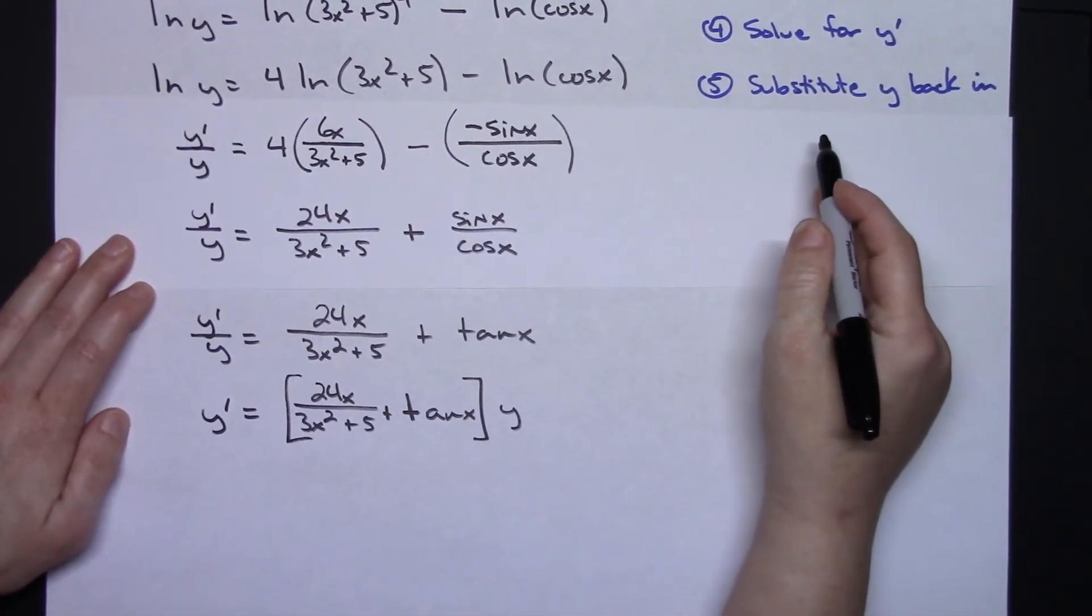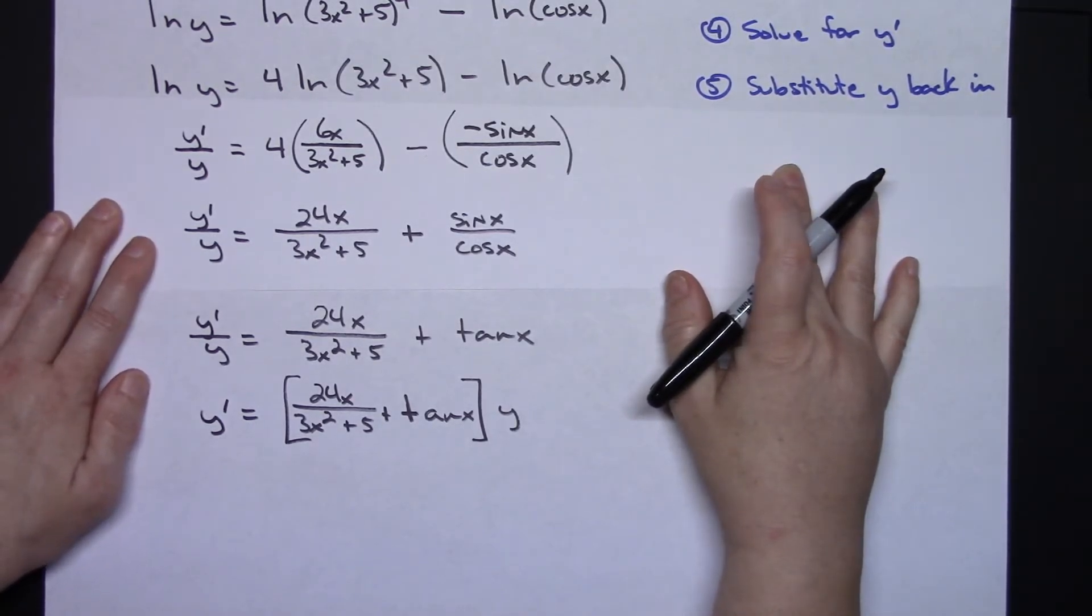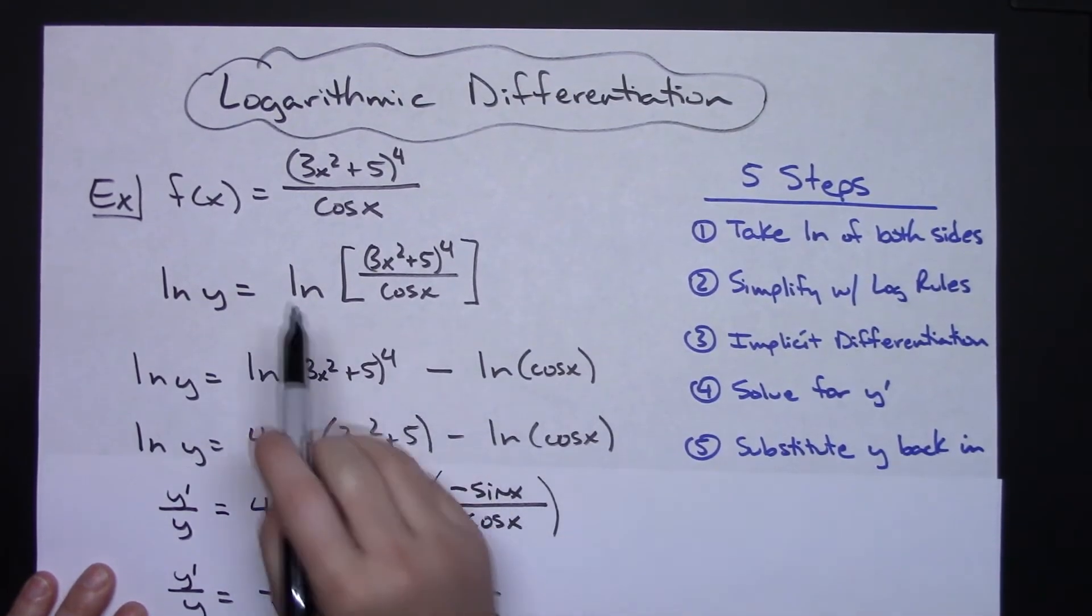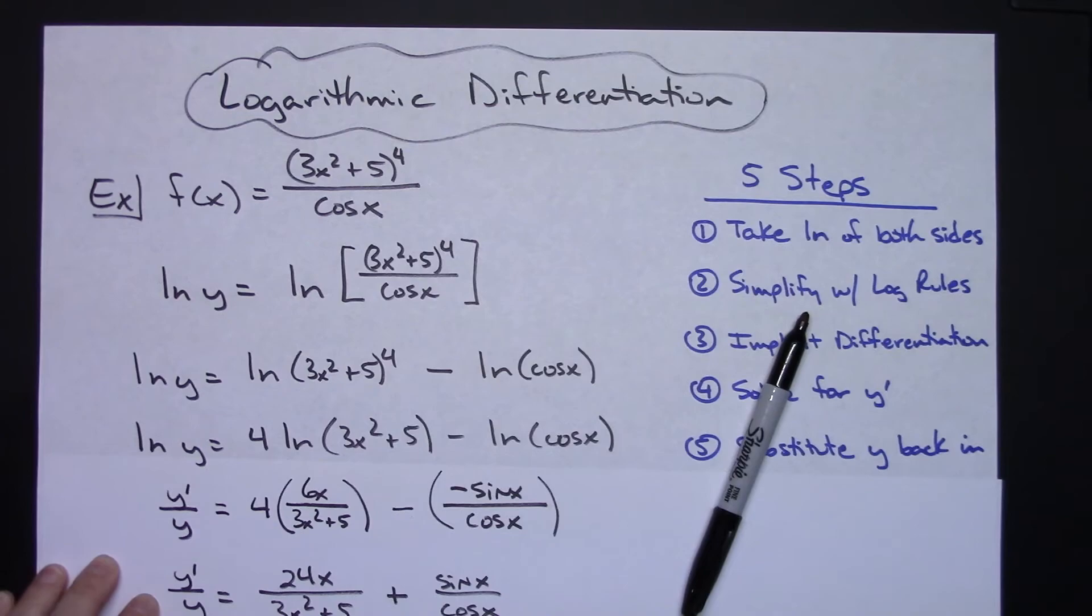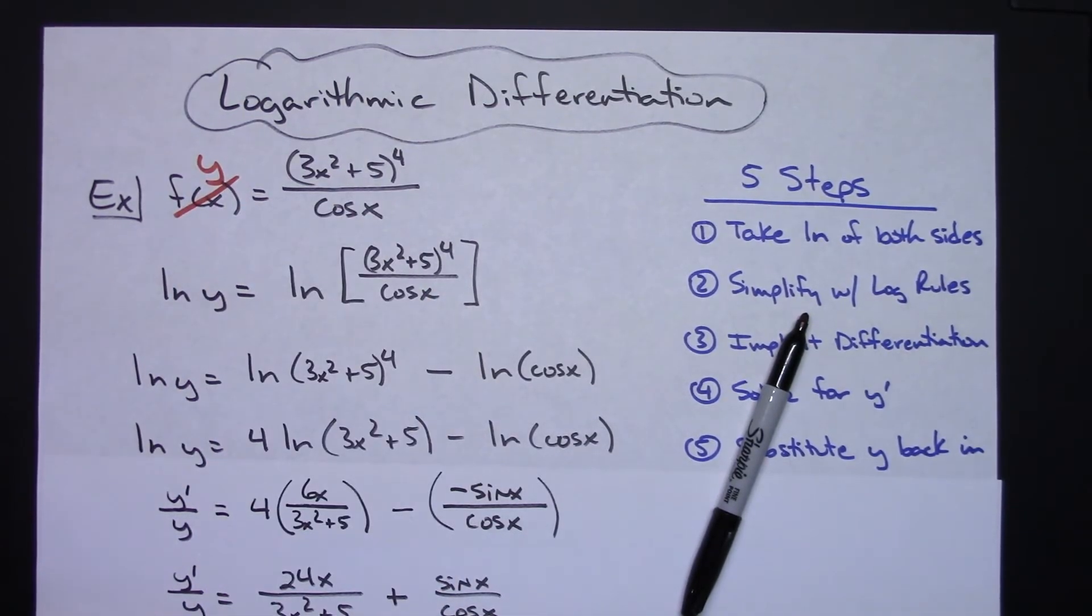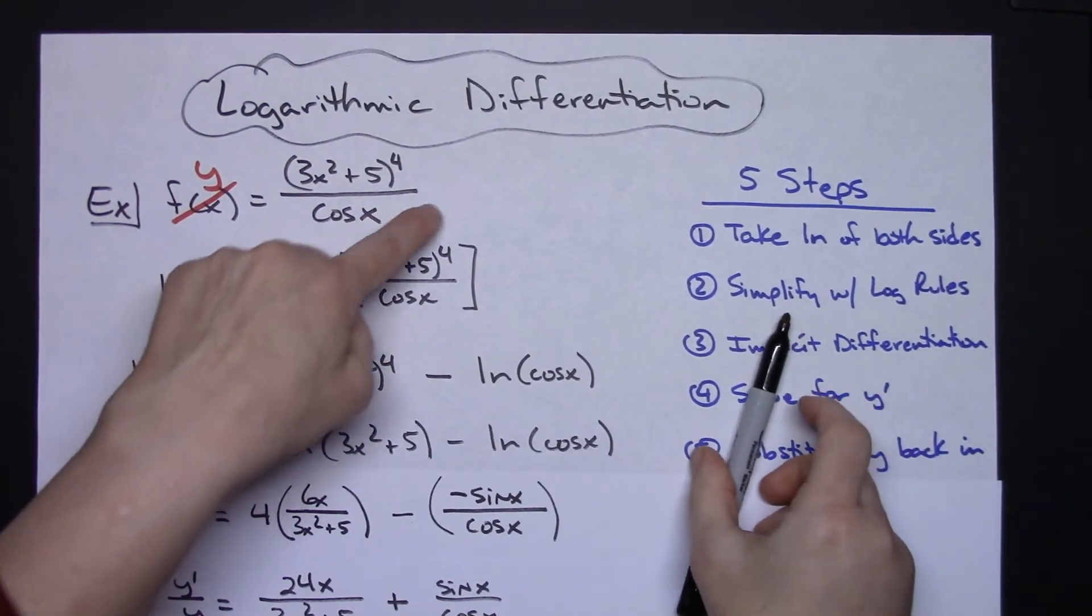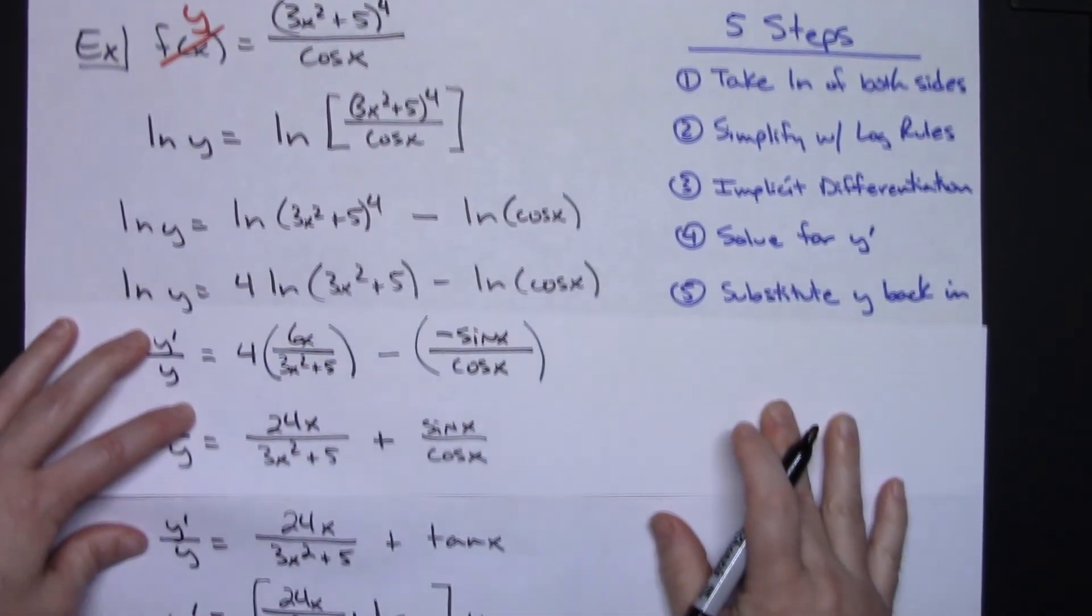And then the last step, substitute y back in. So let's go back all the way back up to the original problem up here. If I change to this f(x) which I did, so if I changed that f(x) really to a y, then I'm substituting y back in. So I'm going to substitute this original equation back in for my y.